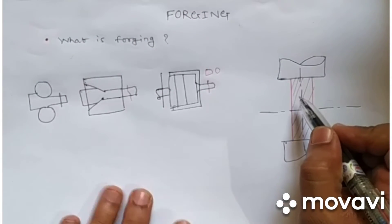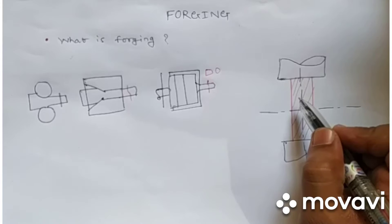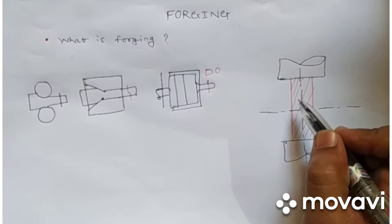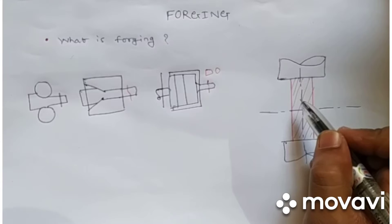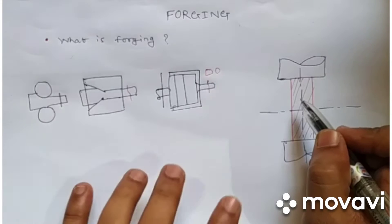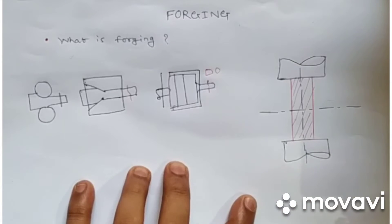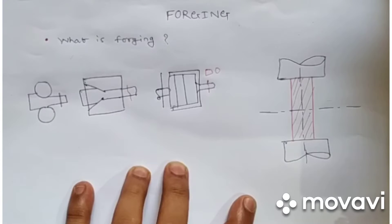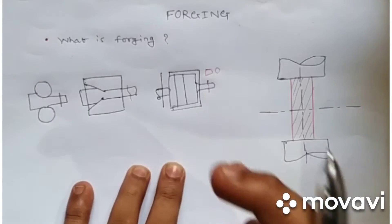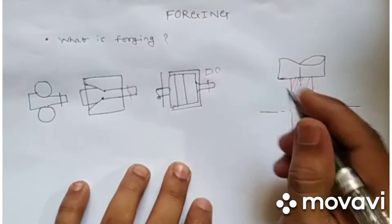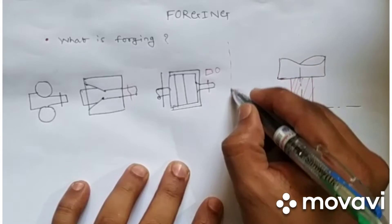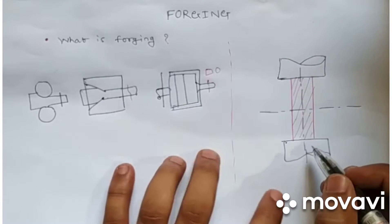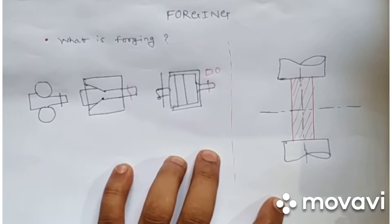In forging, we can get a non-uniform cross-sectional area to some extent, and this is one of the main advantages. With the help of forging, we can produce components that have different cross-sectional areas, and that way we can give them different properties in different directions and achieve our target.